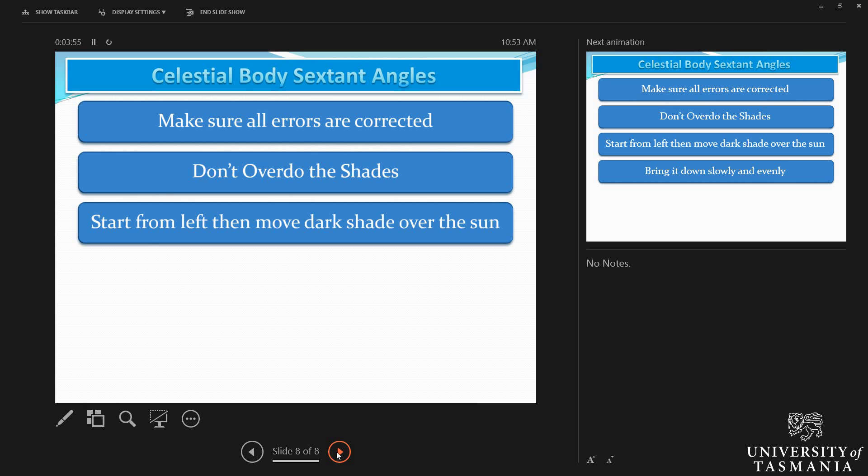Always start from the left and then move over to the dark shade over the sun. We are talking about the shades that you use on the sextant.